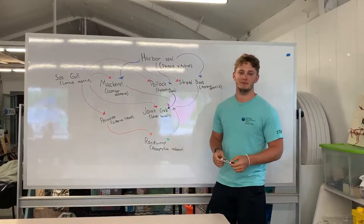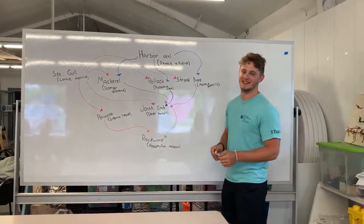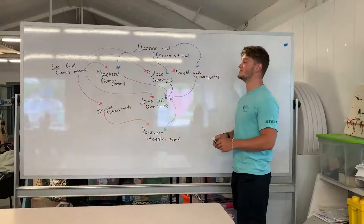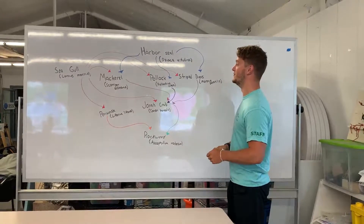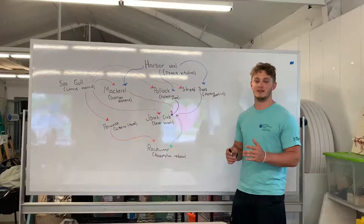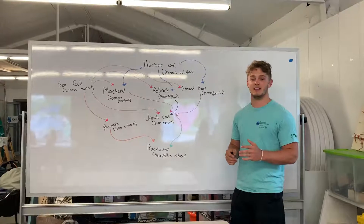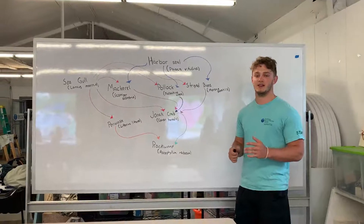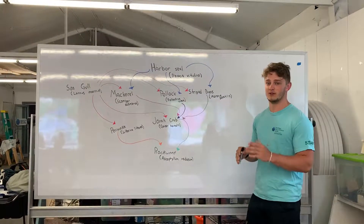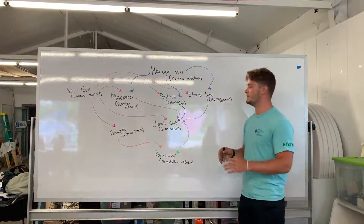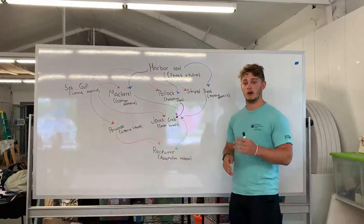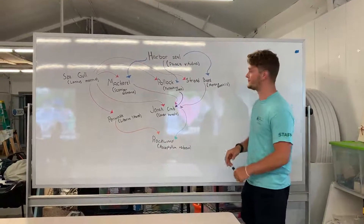Hey everybody, Holden here at Boothbay Science Center. Today we're going to be talking about ecosystems and food webs. An ecosystem is basically the environment and the animals and how they interact with one another in a certain area. And then the food web is what eats what in that ecosystem.